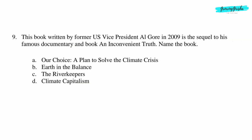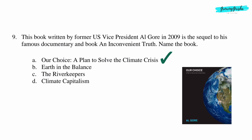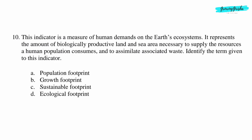Question 9: This book, written by former US Vice President Al Gore in 2009, is the sequel to his famous documentary and book 'An Inconvenient Truth'. Name the book. Option A: 'Our Choice: A Plan to Save the Climate Crisis'.